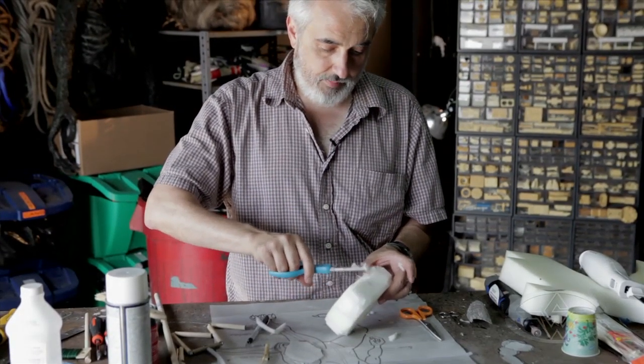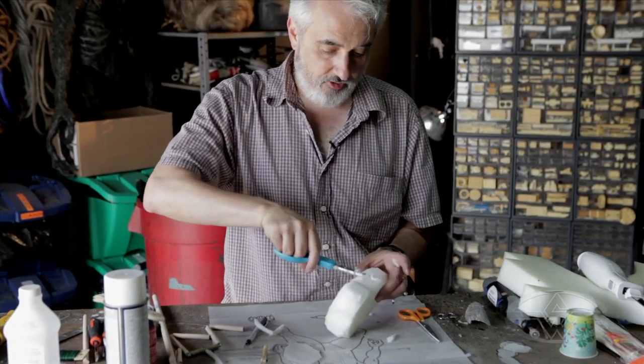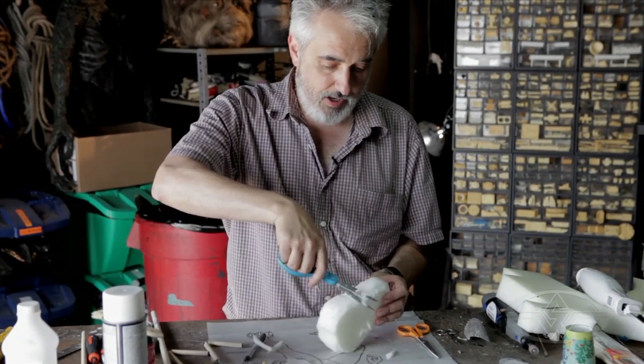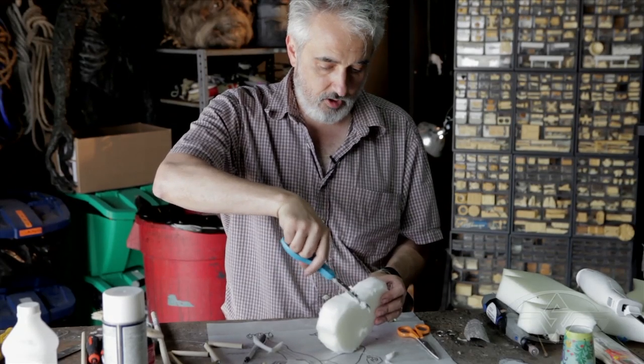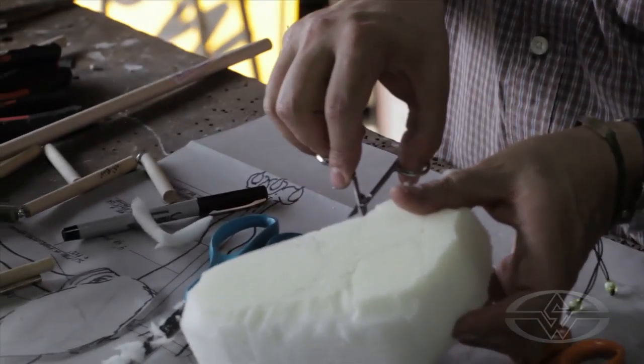But I know that I'm going to have a lot of lizard skin showing, so I need to refine these shapes. I'm going to move from a big pair of scissors like this to a smaller pair of scissors, like these little cuticle scissors that you can get from a drugstore.